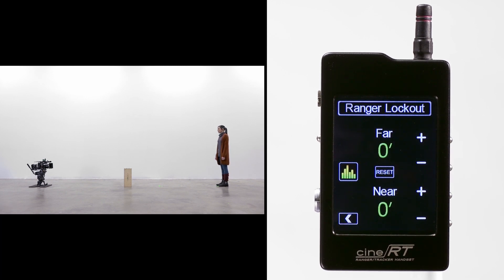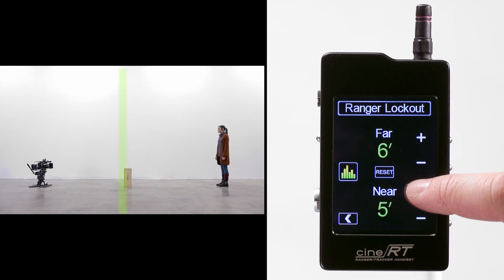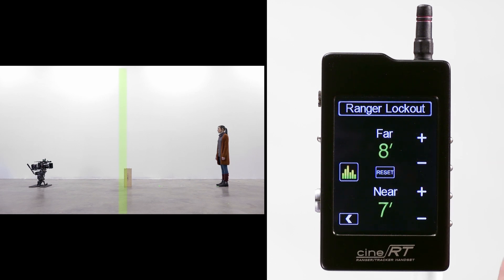To preserve the range in front of the AppleBox, we'll advance the near side of the lockout to just in front of it, and advance the far side of the lockout to just past it.